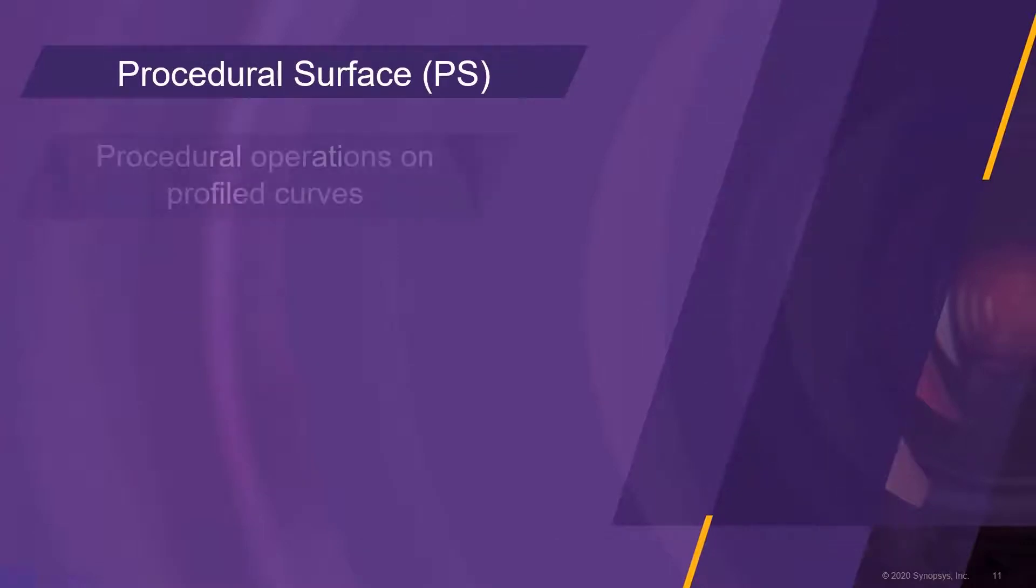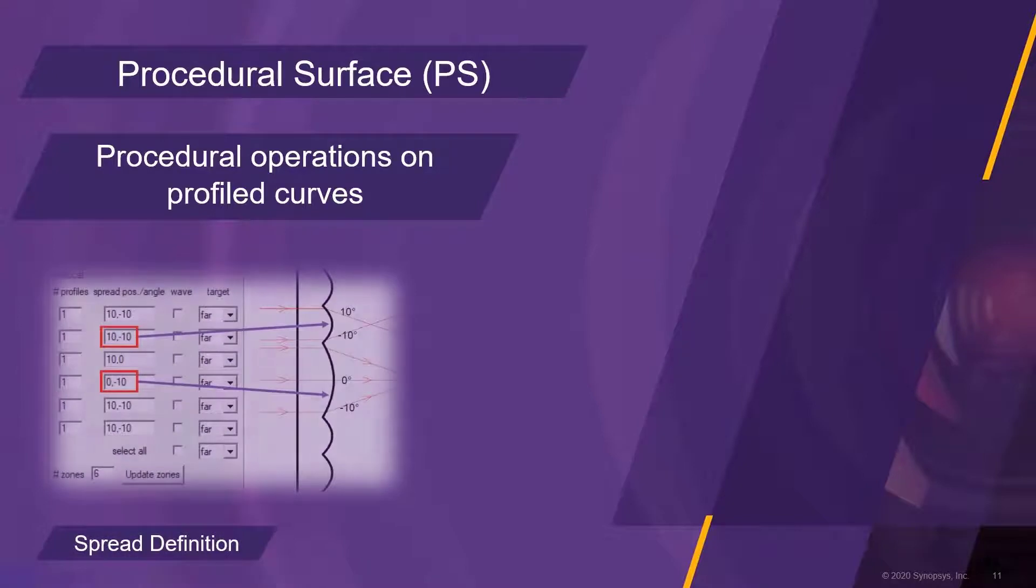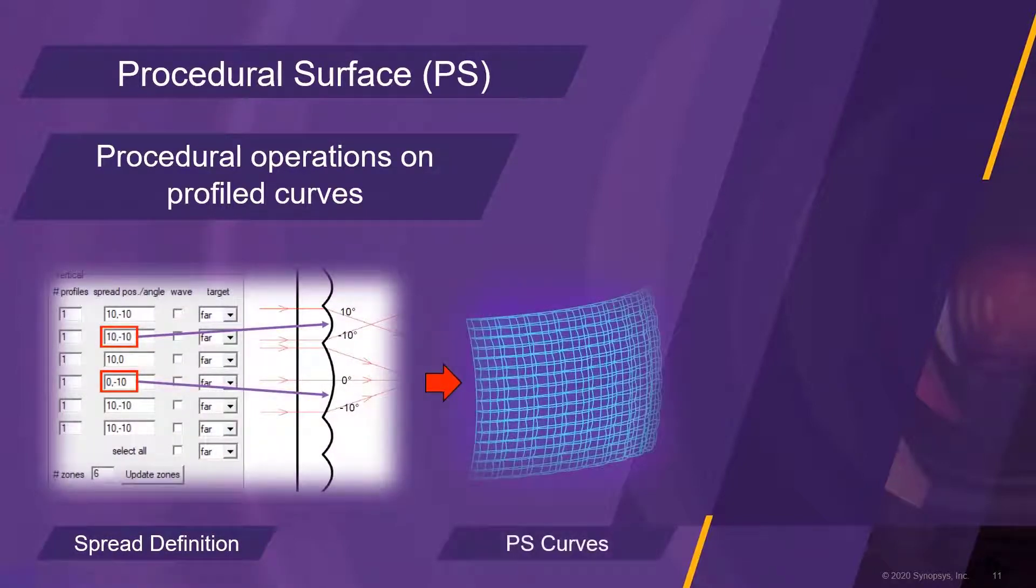The next feature using the FunGeo principle is the procedural surface tool, in short PS. PS surfaces are created by lining up focal curves along profiles, and then extruding the profiles along spine curves.